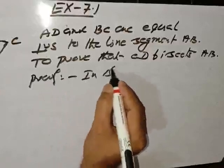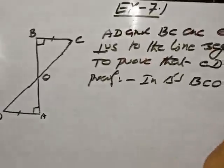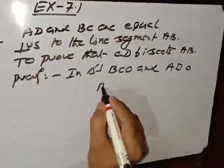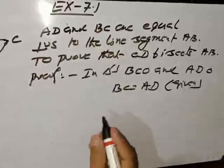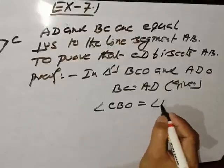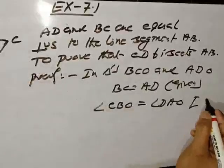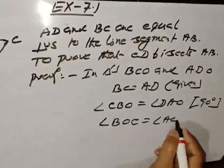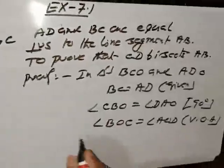In triangles BCO and ADO. BC is equal to AD, it is given. Angle CBO is equal to angle DAO. You see, CBO, DAO. Why? Because it is 90 degrees. And angle BOC is equal to angle AOD, vertical opposite angles. So both the triangles are congruent.